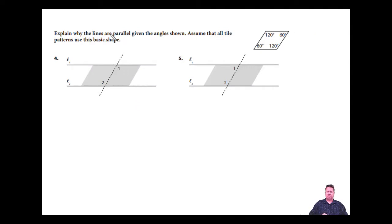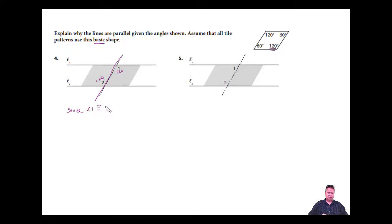In this example, we're going to explain why the lines are parallel. All the tiles use this basic shape with 120 and 60 degree angles. Angle two is in the 120-degree position and angle one is also in the same position at 120 degrees. If this is the transversal, these are alternate interior angles. Since angle one is congruent to angle two at 120 degrees and they are alternate interior angles, the lines must be parallel.